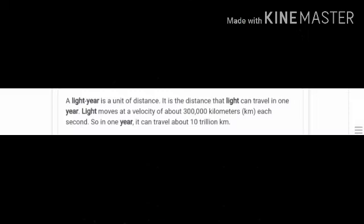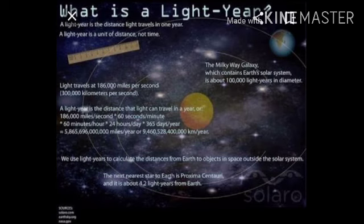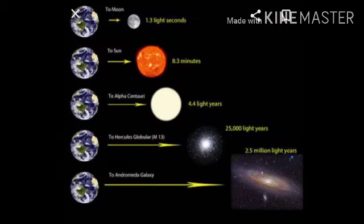Coming to the next unit — light year. Light year is also a unit of distance. It is the distance that light can travel in 1 year. Light moves at a velocity of about 3 lakh kilometers every second, so in 1 year it can travel about 10 trillion kilometers. Using light year, we can measure the distance between the earth and the moon, the distance between the earth and the sun, and the distance between earth and other galaxies.